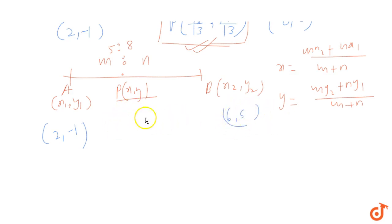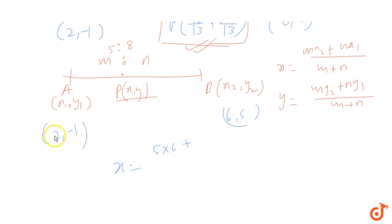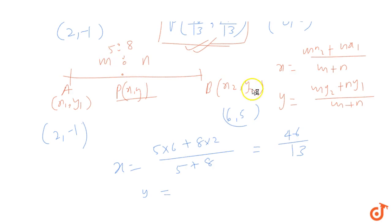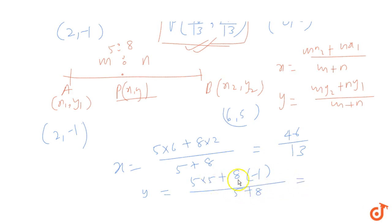Taking m=5, n=8, A(2,-1) and B(6,5): x = (5×6 + 8×2)/(5+8) = (30 + 16)/13 = 46/13. Similarly, y = (5×5 + 8×(-1))/13 = (25 - 8)/13 = 17/13. We get the same coordinates, so it is proved that M divides AB in the ratio 5:8.